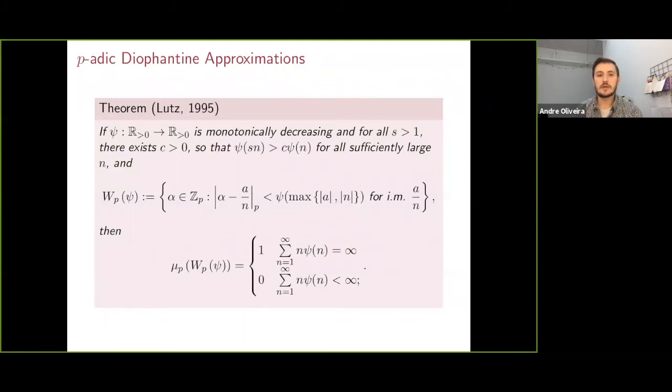And in this case, Lutz showed in a 1995 thesis that this set also has measure zero or one and that we can totally determine it by the convergence or divergence of the series.